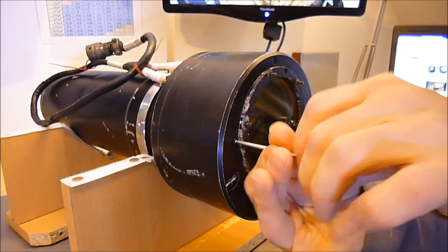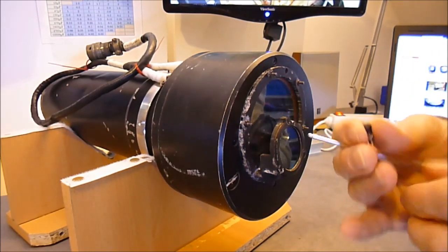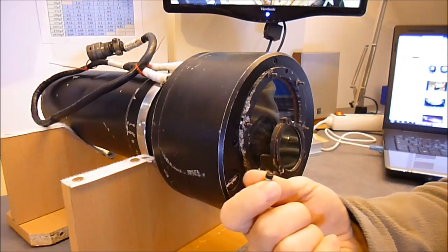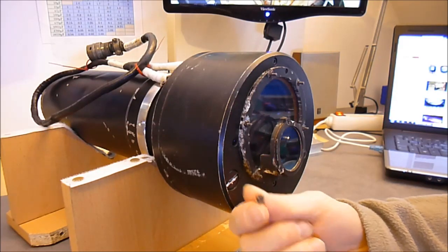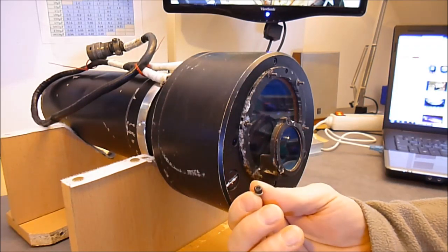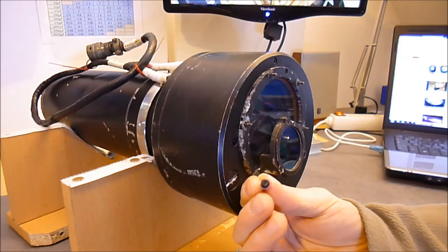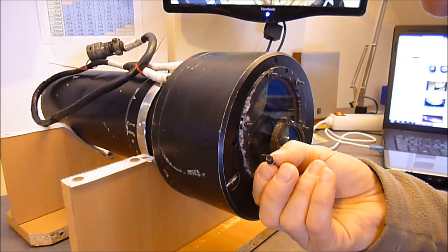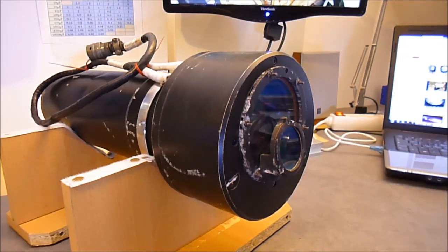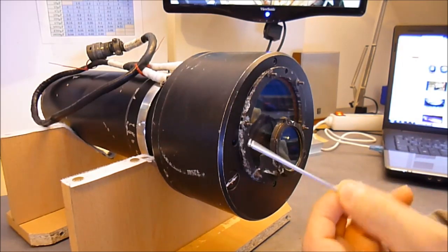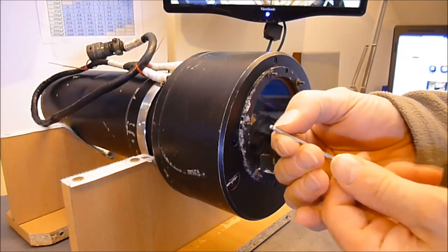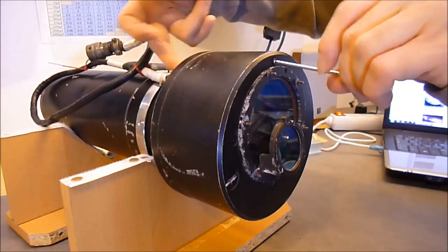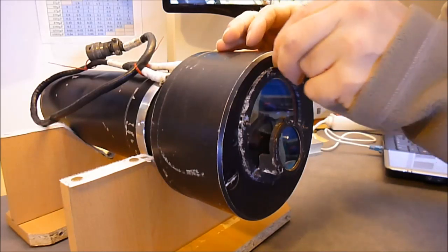So here we have allen screws. By the way, it is quite rare to find allen screws on aircraft equipment, in particular vintage 60s, 70s vintage aircraft equipment. Most of the time they are flat head slotted screws. But here we have allen and it is very convenient to have ball handed allen keys for this because the screws back here you need to attack them at an angle.